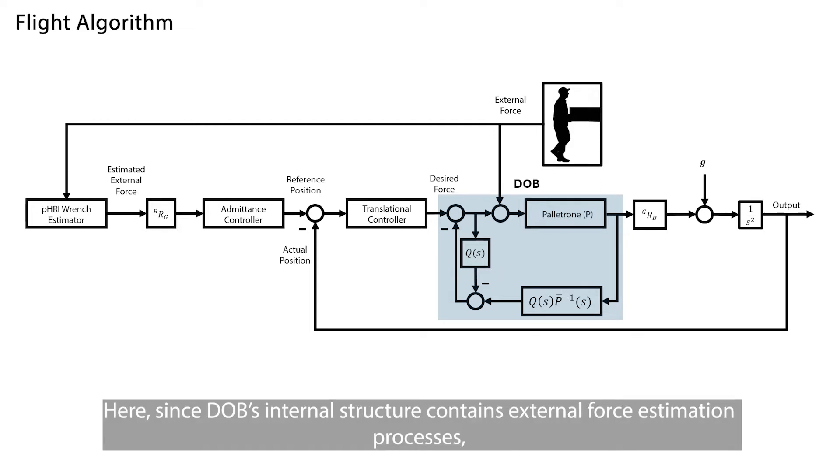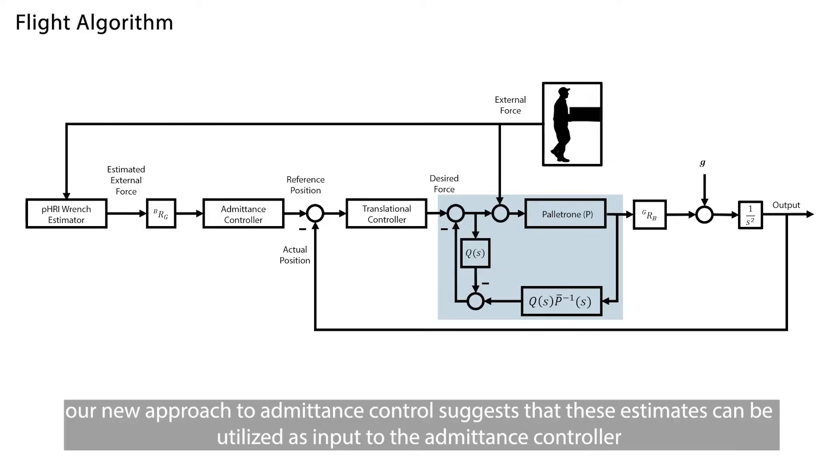Here, since DOB's internal structure contains external force estimation processes, our new approach to admittance control suggests that these estimates can be utilized as input to the admittance controller.